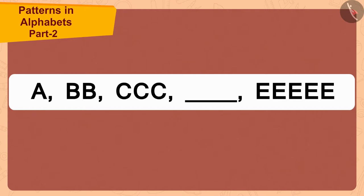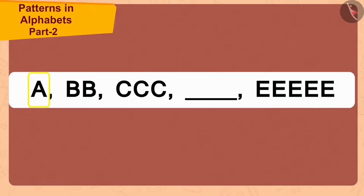Children, can you tell which letters Bola has written in the blank space? Here, the letters are written in sequence. And each time the letters are being added to the pattern, the number of times that letter is being repeated is also increasing by one. For example, the first letter A is written only once, while the second letter B is written twice.